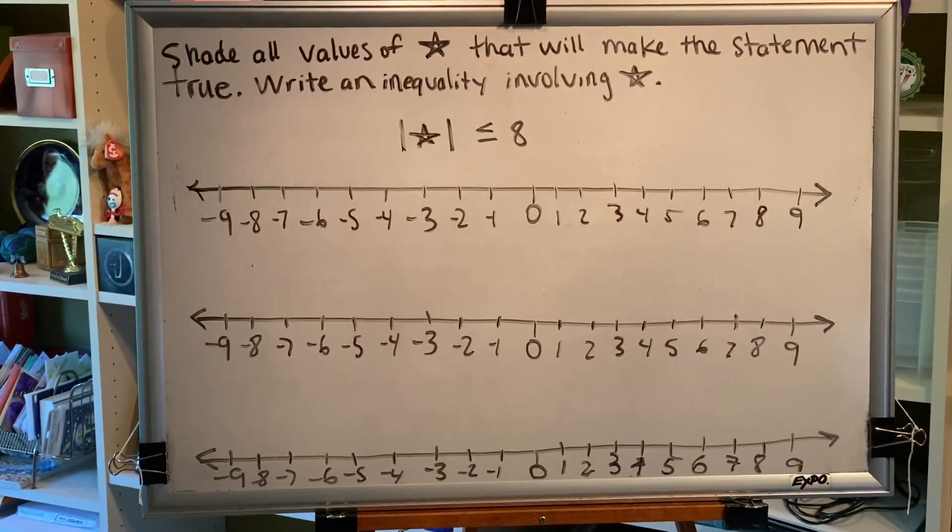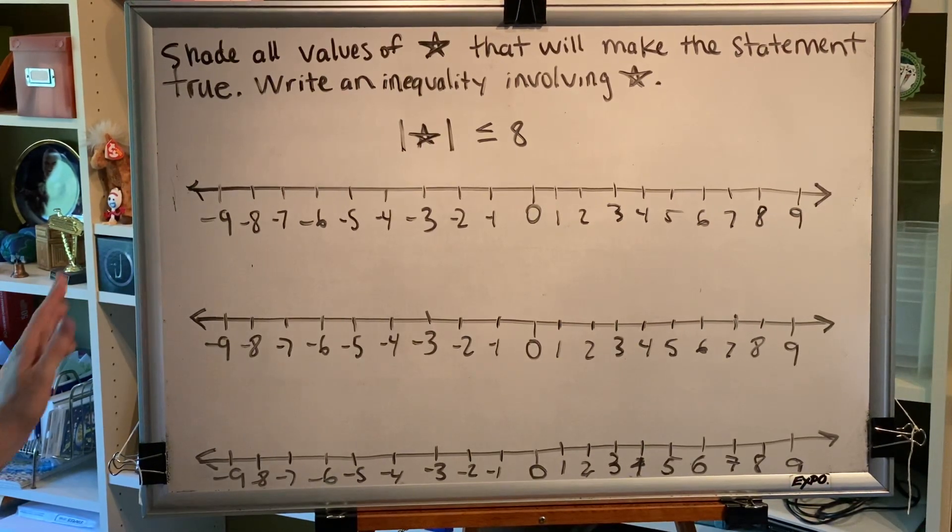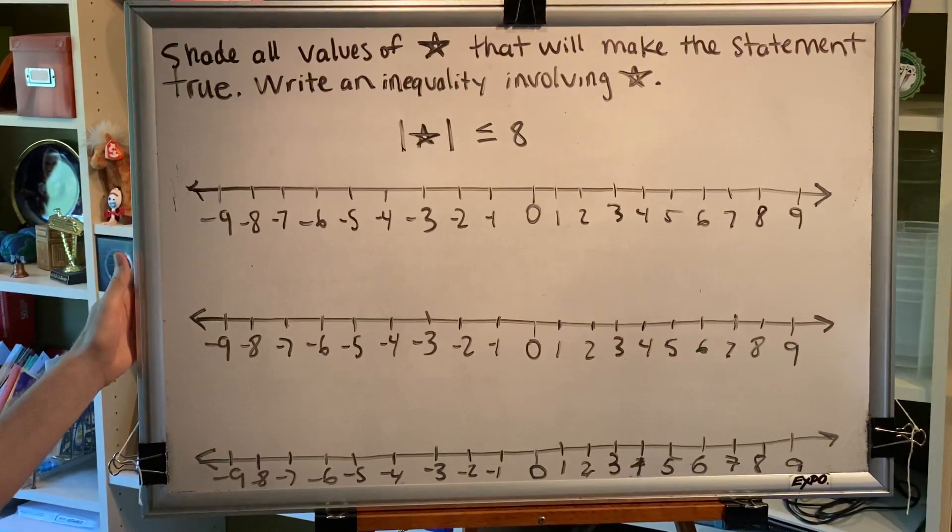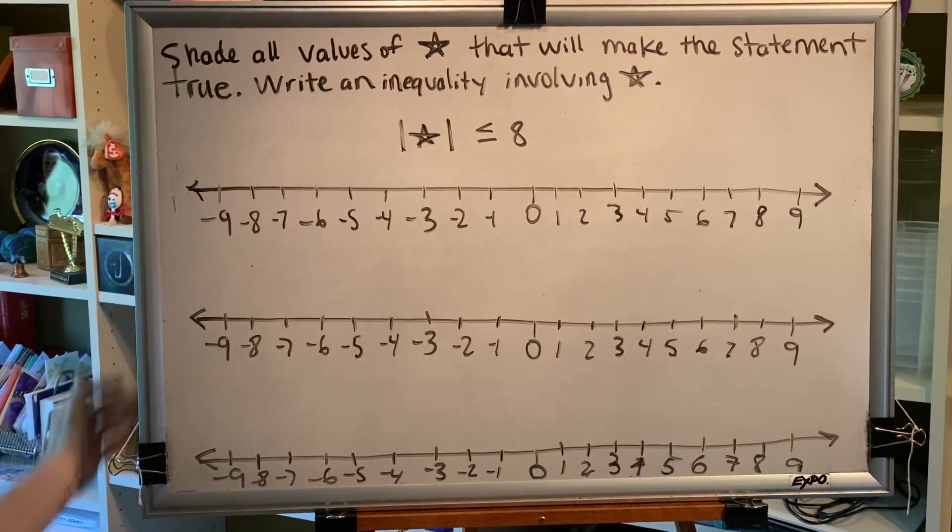The topic of this video is rewriting absolute value inequalities using a number line. Let's look at some problems. Shade all values of star that will make the statement true. Write an inequality involving star.